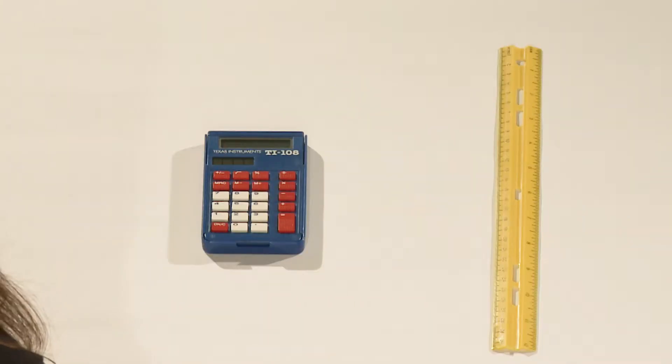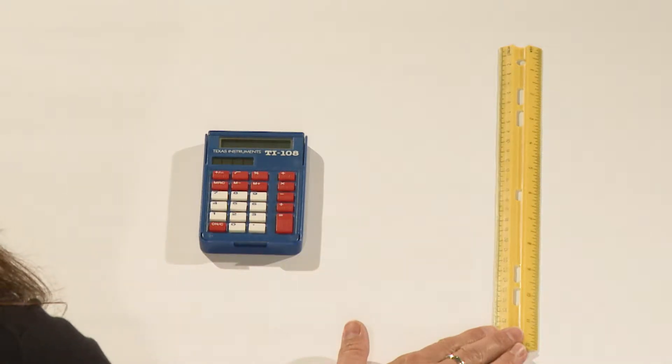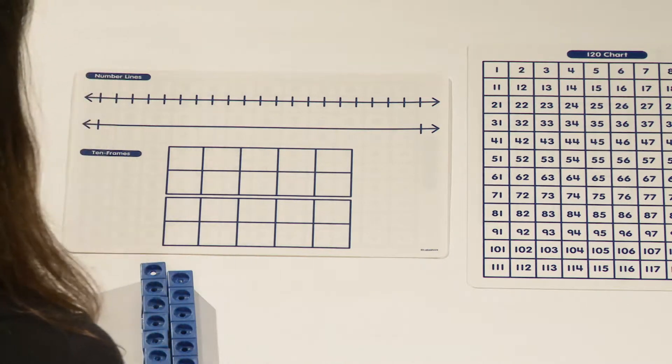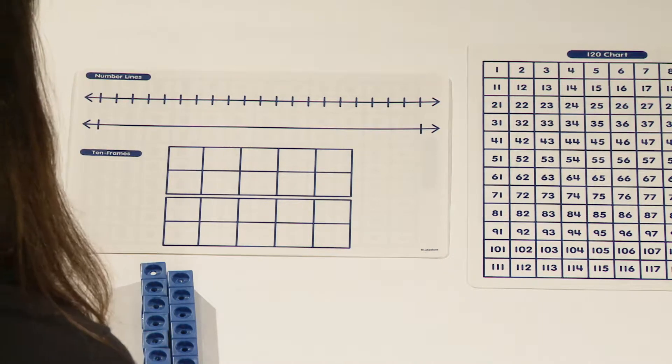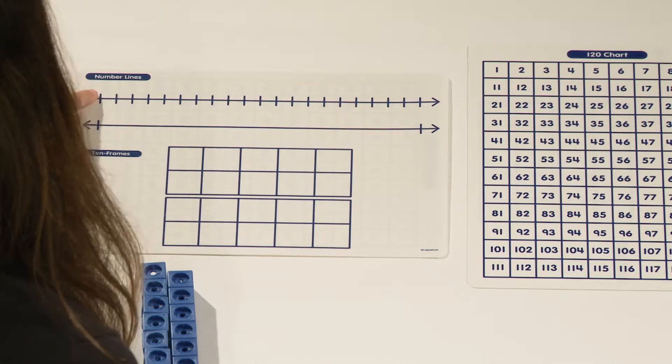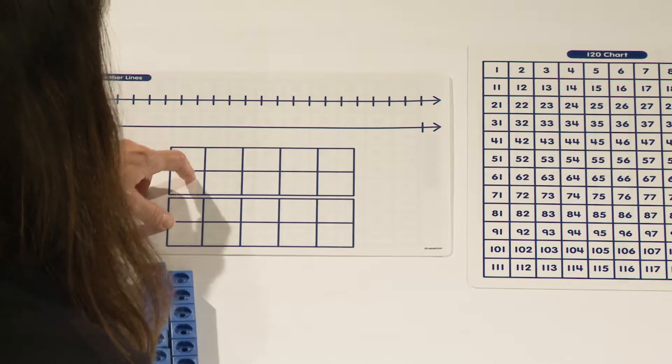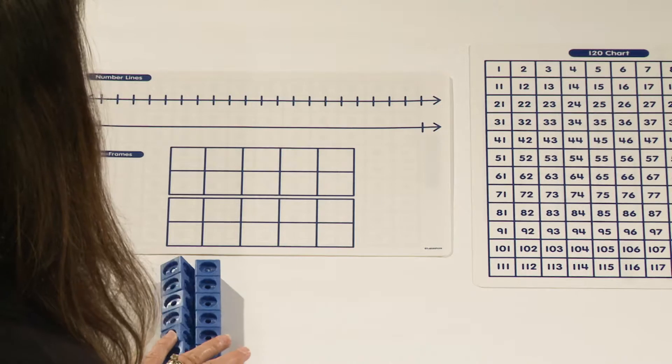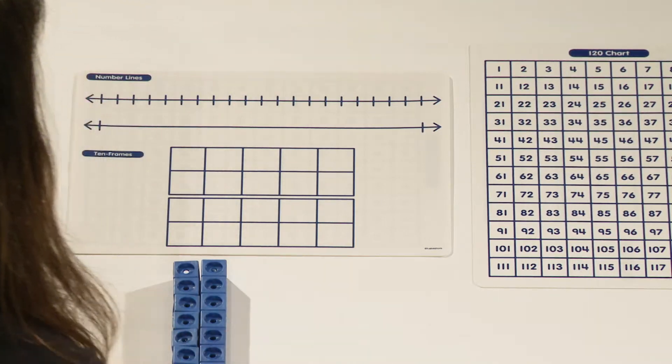In math class, we teach a variety of concepts like fractions and multiplication. We also want students to think like a mathematician. One of the ways that we do this is to teach students to select and use tools appropriately. For many adults, the only tools that we used in school were calculators and rulers. Today we use those tools including a variety of other tools such as number lines, 10 frames, number charts, and counters, as well as many other tools.